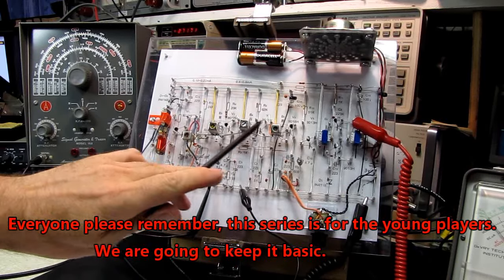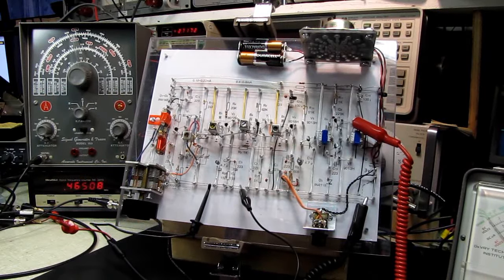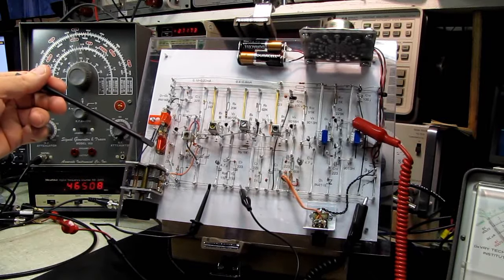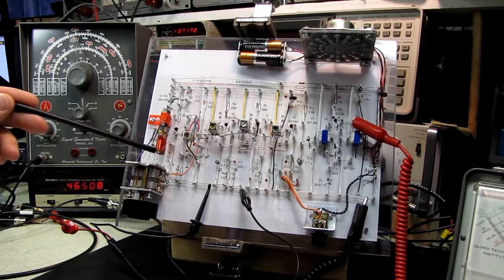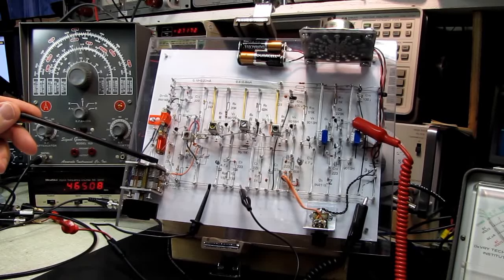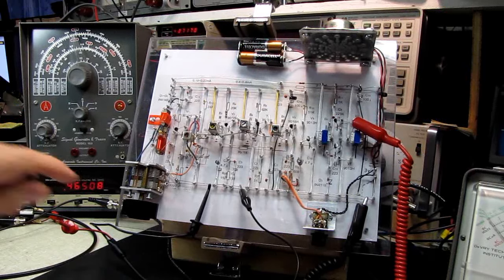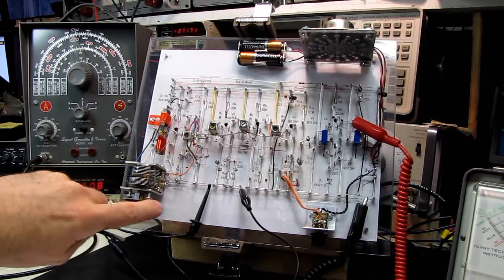We're going to align the IF strip, we'll align the oscillator, we'll align the antenna tuning. When we finish, the receiver should be able to tune correctly to both ends of the band from 1605 kilohertz or 1.605 megahertz down to 525 kilohertz, and those two points should appear at the ends of our tuning capacitor.